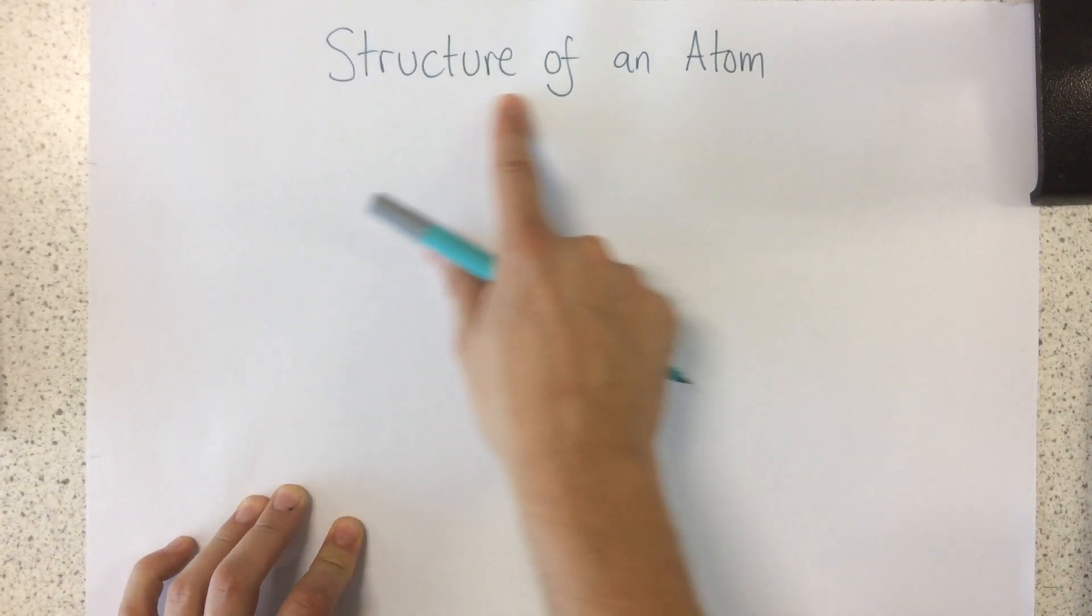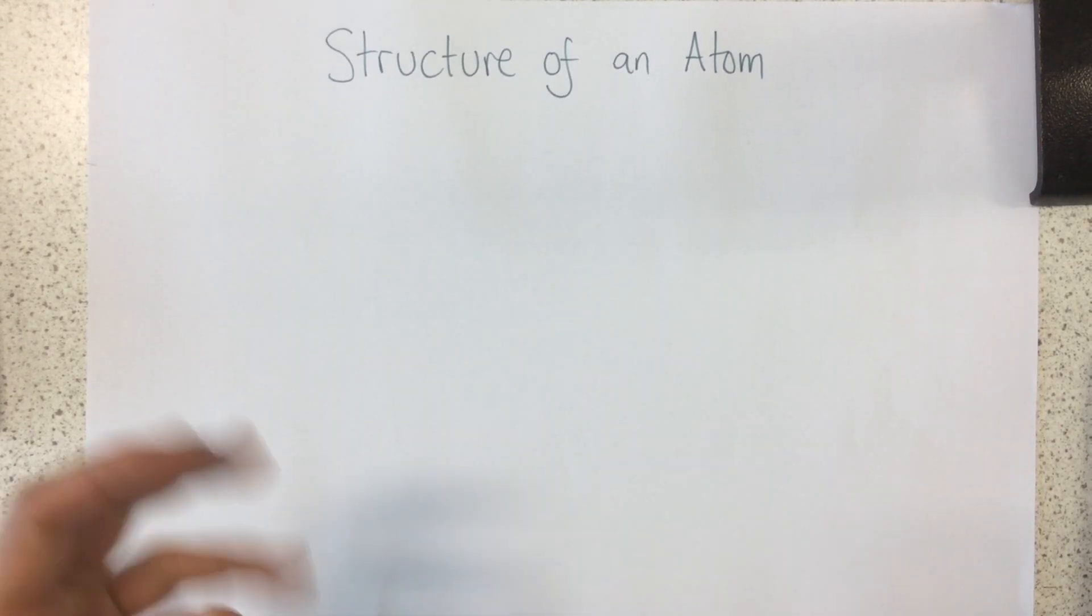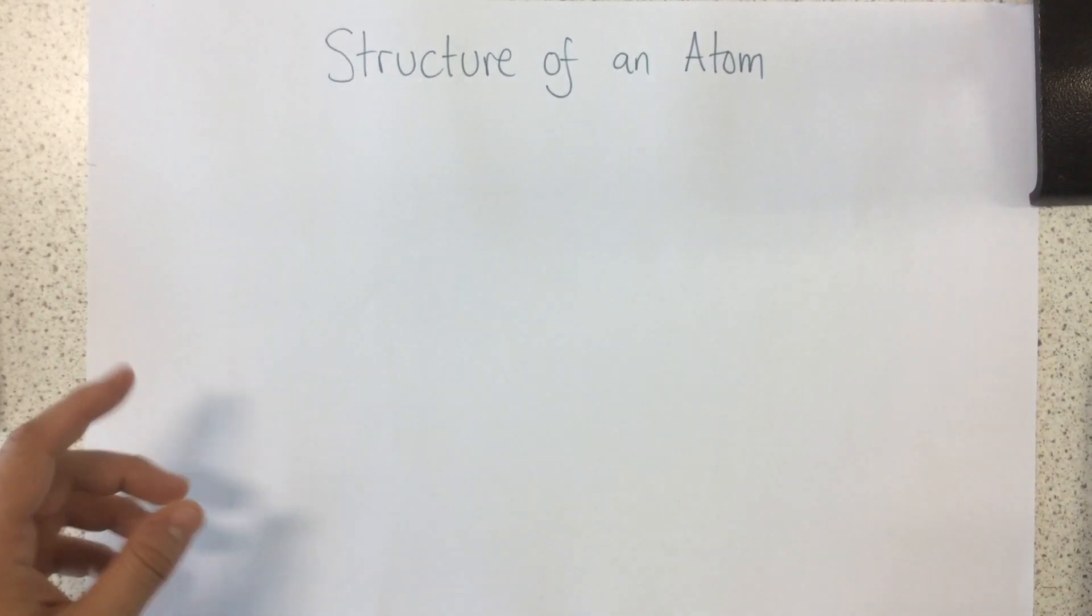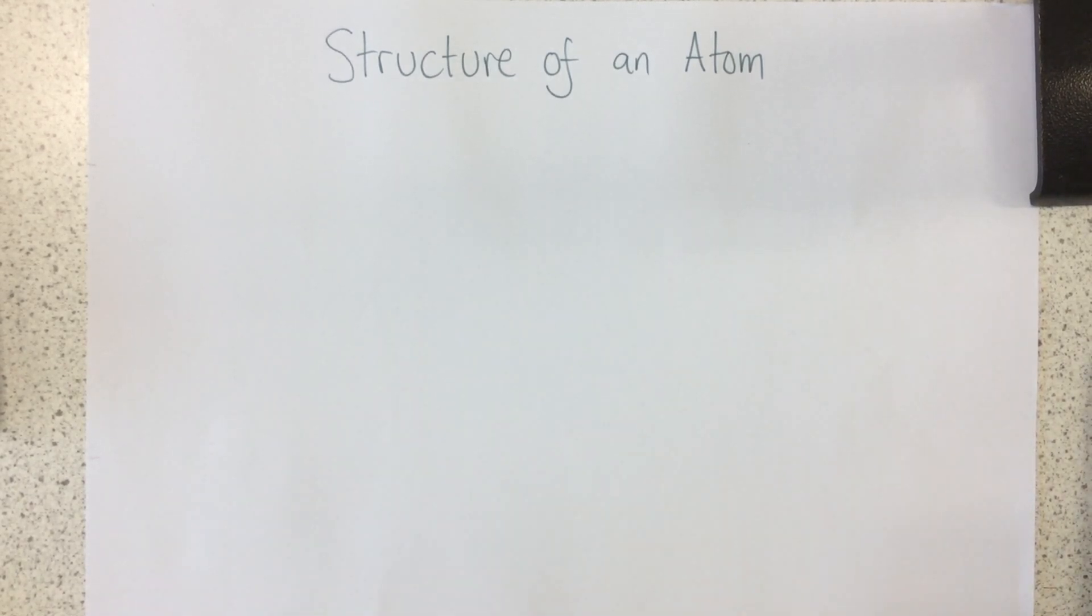Okay, today I'm going to talk to you about the structure of an atom. So we're going to learn about protons, neutrons and electrons, and how we could use the periodic table to figure out how many of each of these subatomic particles are in each atom.